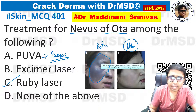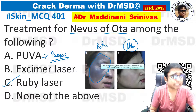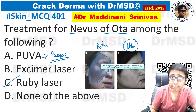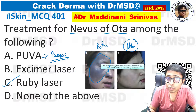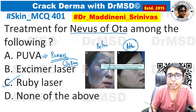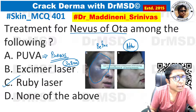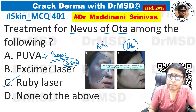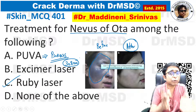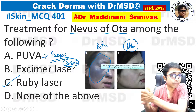Option B, excimer laser — you might feel this is also a type of laser, so why isn't B the answer? Please remember excimer laser is a kind of phototherapy utilizing a wavelength of 308 nanometers. It is a handheld phototherapy device used in patients of vitiligo. If a vitiligo patient has generalized depigmentation, we ask them to take narrow-band UVB therapy.